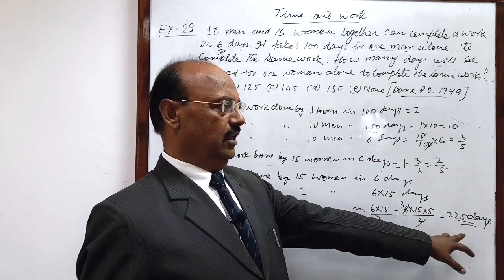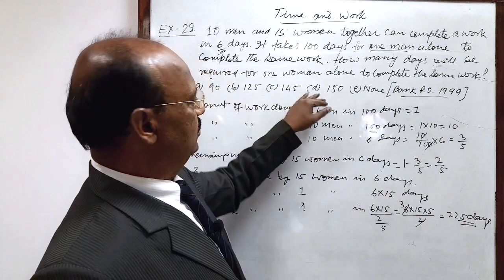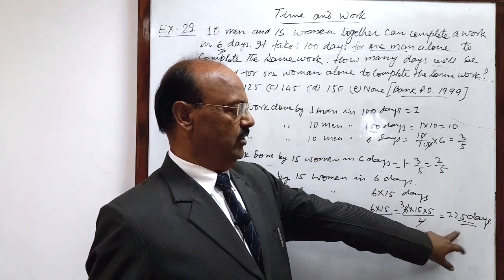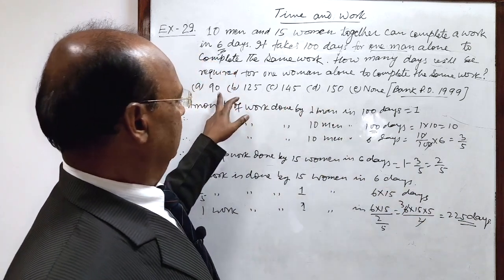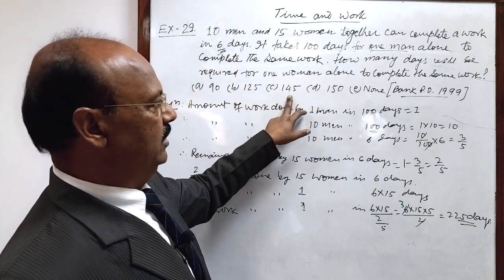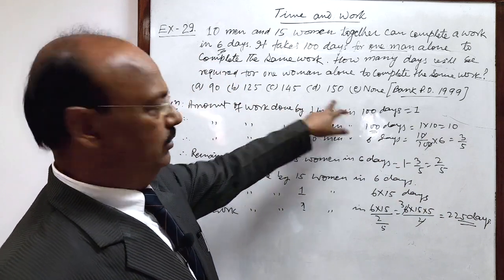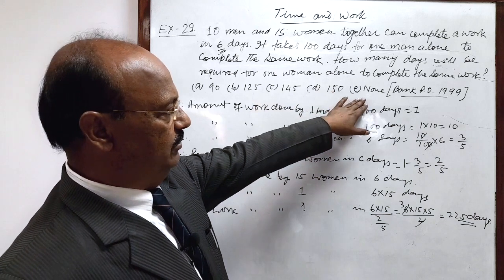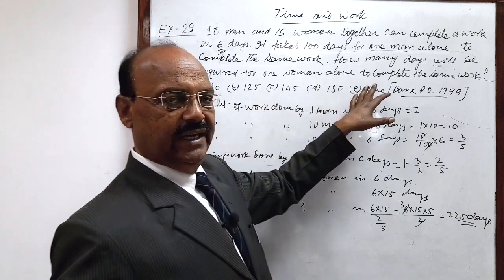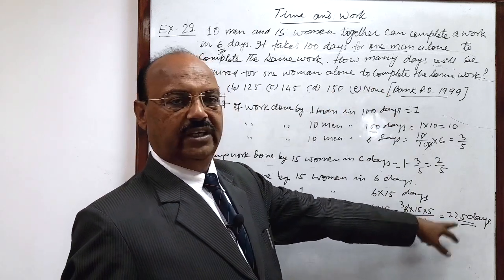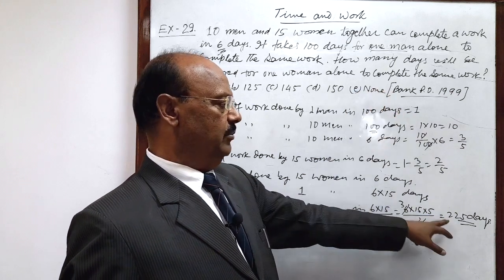This is the answer, but in our these options 225 is not given here: 90, 125, 145, 150, four options are given, and another fifth option is none. So what will be the answer? None, because answer is coming 225 days. So therefore answer is equal to E, which is none. Correct.